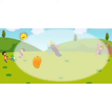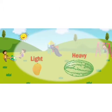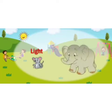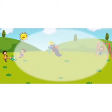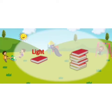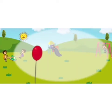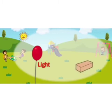A mango is light and a watermelon is heavy. A mouse is light and an elephant is heavy. A book is light and six books are heavy. A balloon is light and a brick is heavy.